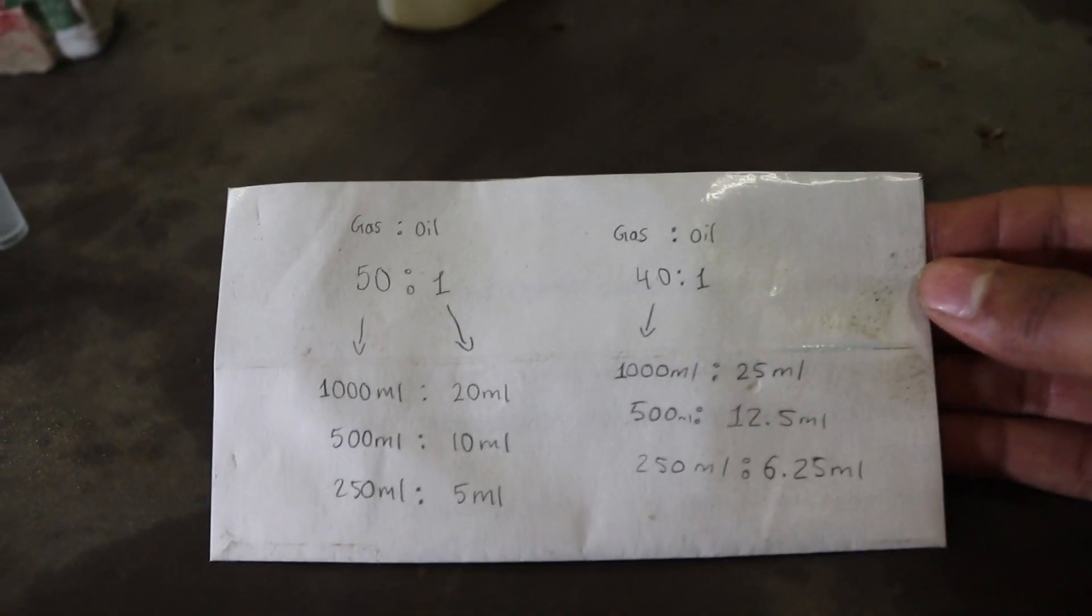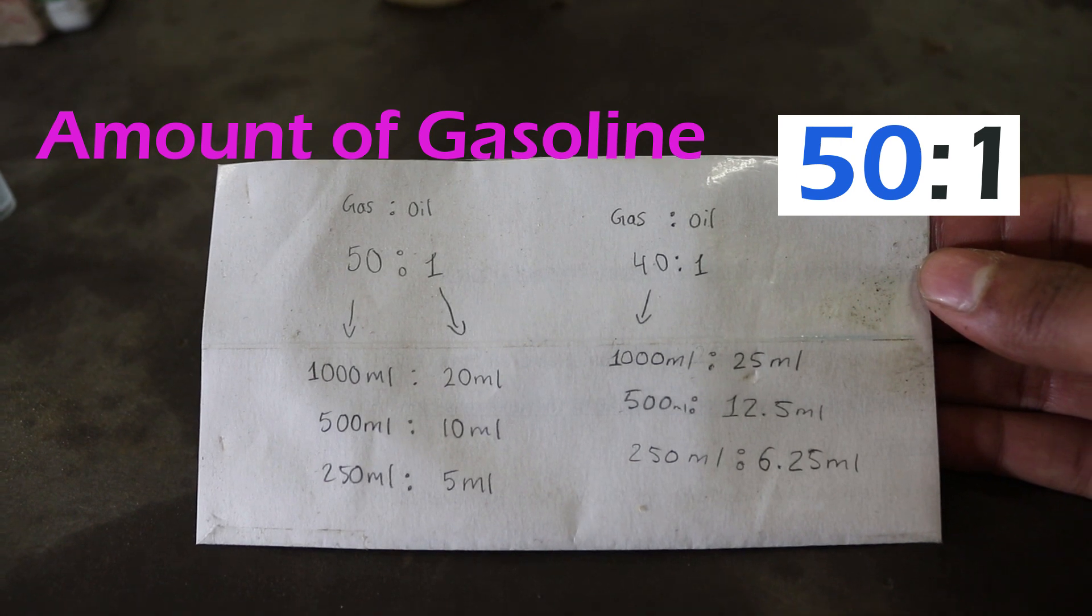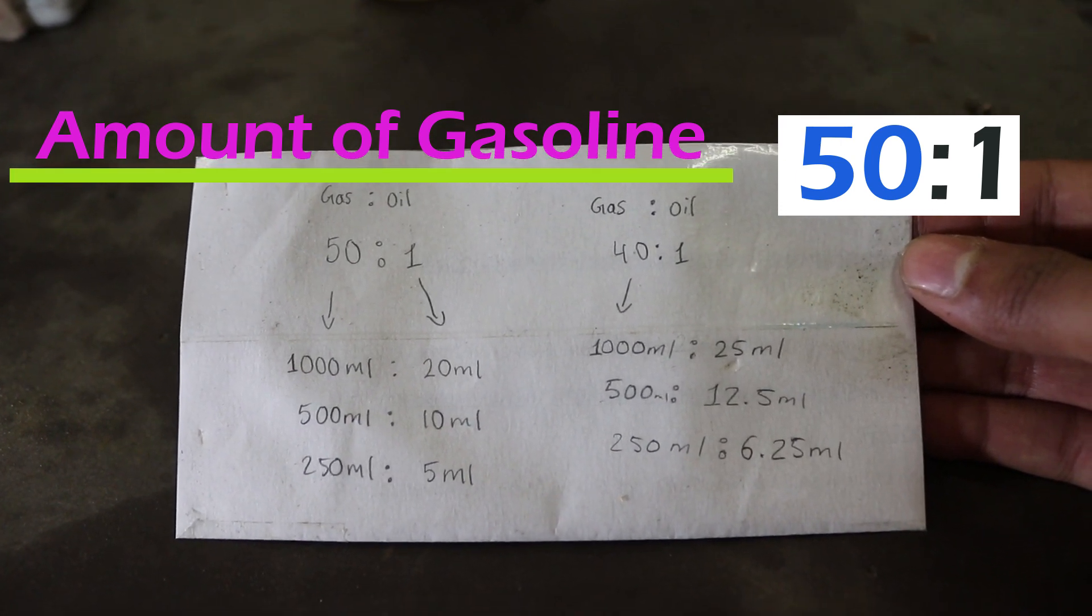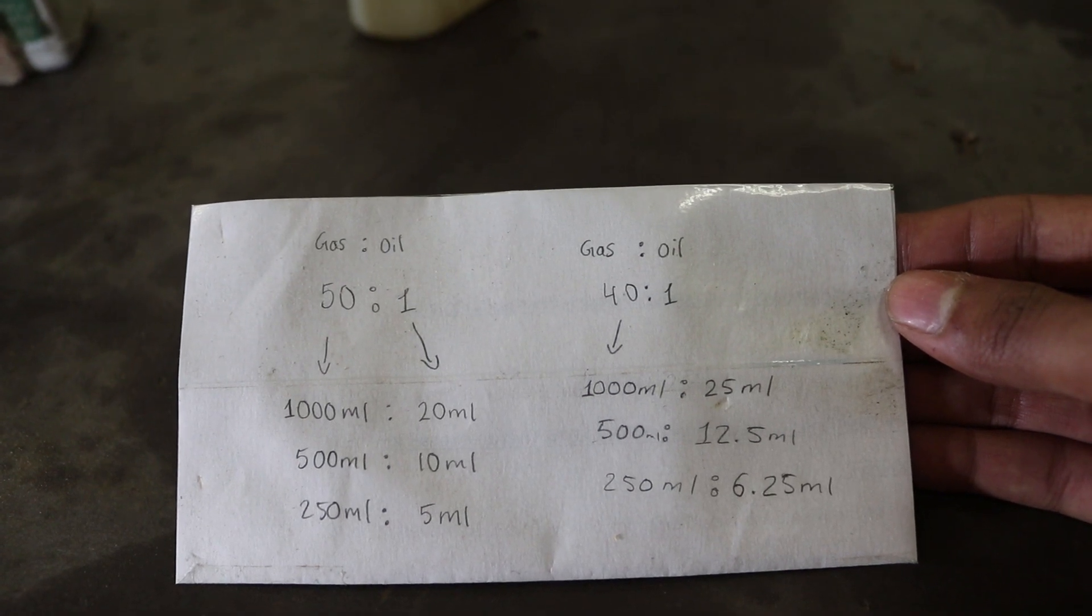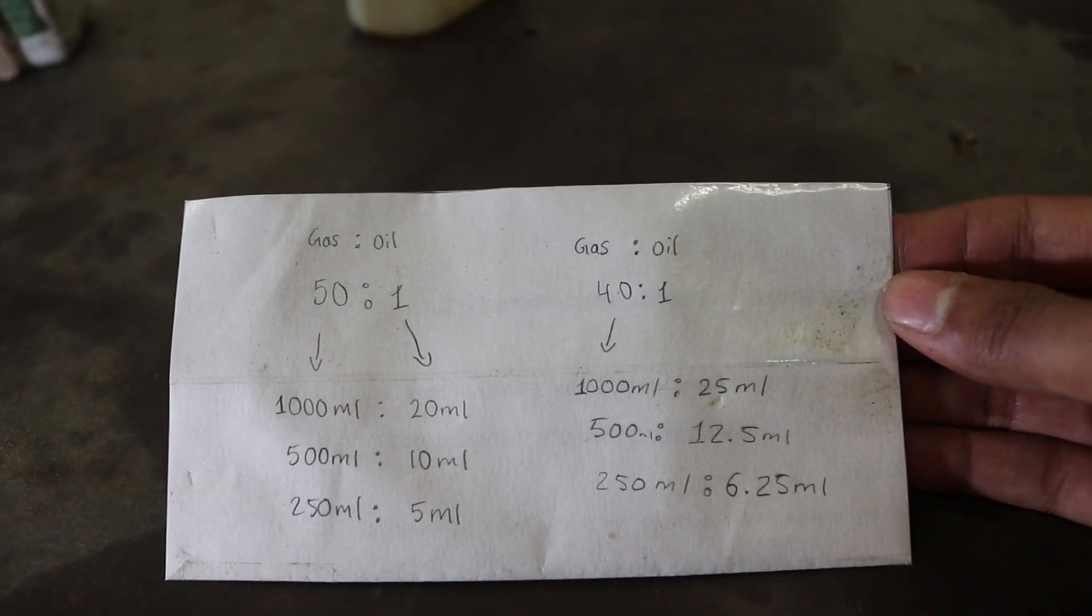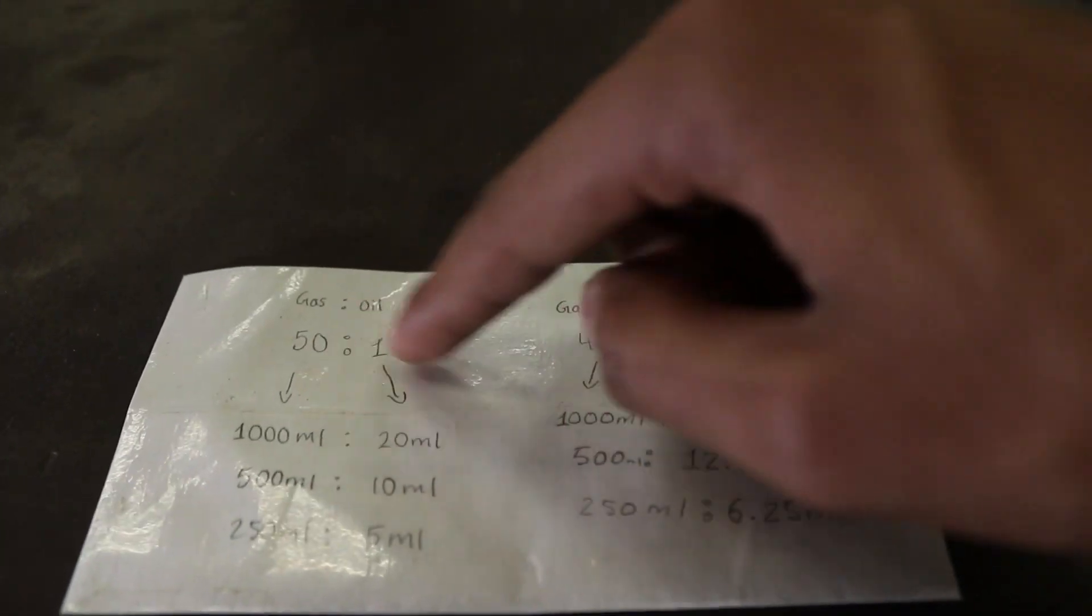Essentially it's a simple calculation. You divide the amount of gasoline you have by the ratio, which in this case on the left is 1,000 ml divided by 50, which gives you 20 ml of oil. It's just simple ratio, equivalent fractions.